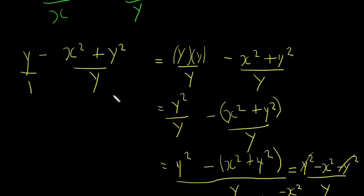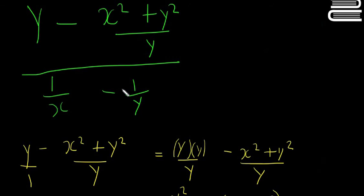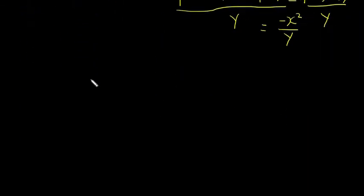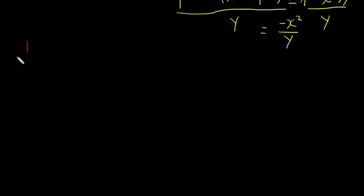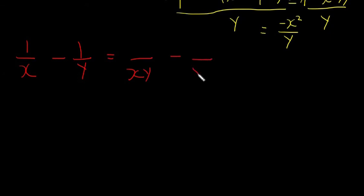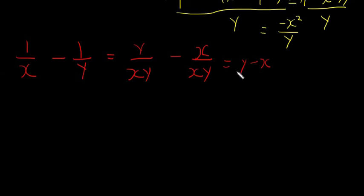Now we scroll back to see what we had on the bottom line: 1 over x minus 1 over y. We'll do that in red. This is very similar to our first example, like 1 over a plus 1 over b from a few videos back. We're going to have y on top of the first fraction and x on top of the second, giving us y minus x over xy. So this is what we have on the bottom.